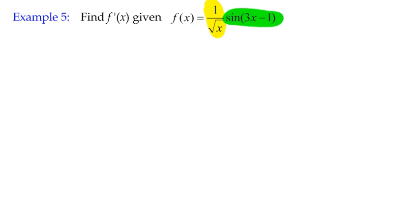The product rule itself states that for the derivative of a function f of x, we can consider, as long as we know our two terms u and v, we can say that it's u dash v plus u v dash or prime.